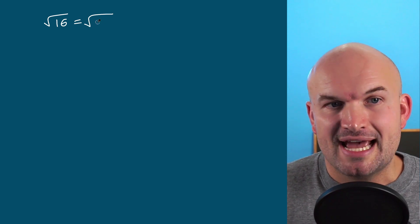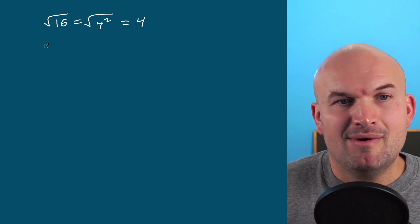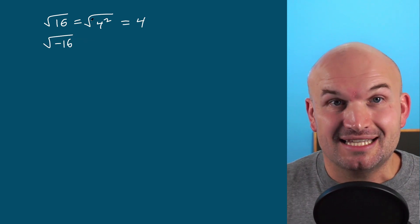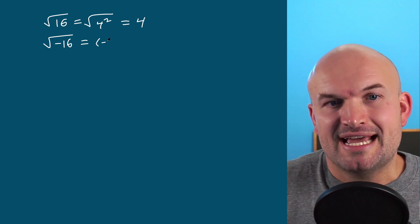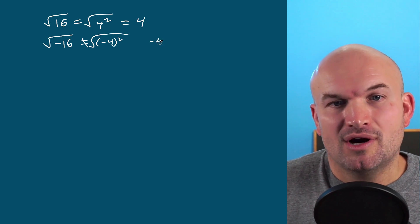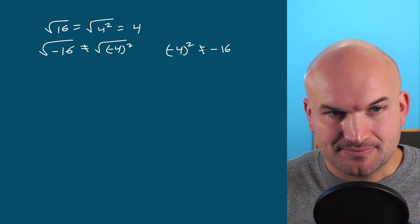The last mistake is with negative radicands. For square roots, most students recognize you cannot take the square root of a negative. For example, the square root of negative 16 — we know we can rewrite 16 as negative 4 squared, which equals 4, but you cannot take the square root of negative 16. There's no real number answer because negative 4 times negative 4 is positive 16, not negative 16.